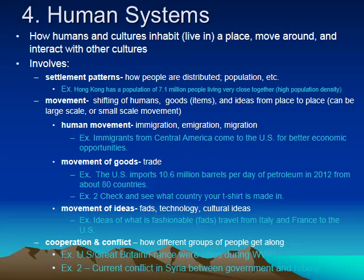The fourth element is human systems, which answers the question: how do humans inhabit a place? It involves how humans settle in places, how they move around in and between places, and how they cooperate and conflict with each other. Settlement patterns discuss how people are distributed — whether there's a high or low population and whether they live close together or further apart. Movement can involve human movement, the movement of goods, or the movement of ideas. An example of human movement would be immigration or migration — for example, immigrants from Central America coming to the U.S. for better economic opportunities.